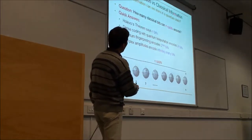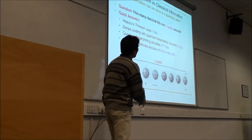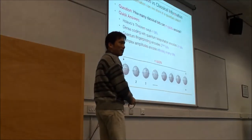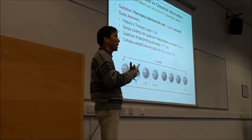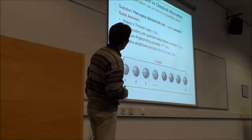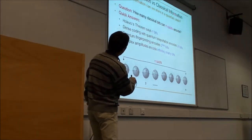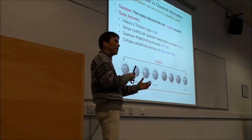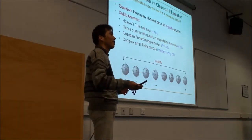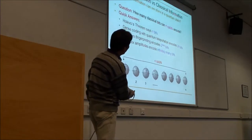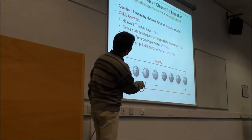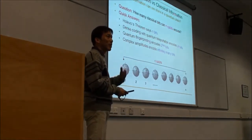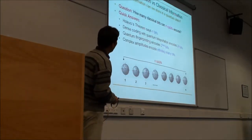However, with a technique called dense coding, together with quantum teleportation, we can actually encode 2n bits into n qubits — doubling the storage. Another technique is the quantum fingerprint. Quantum fingerprinting encodes 2 to the n bits into n qubits — an exponentially large amount. This is exponentially larger.